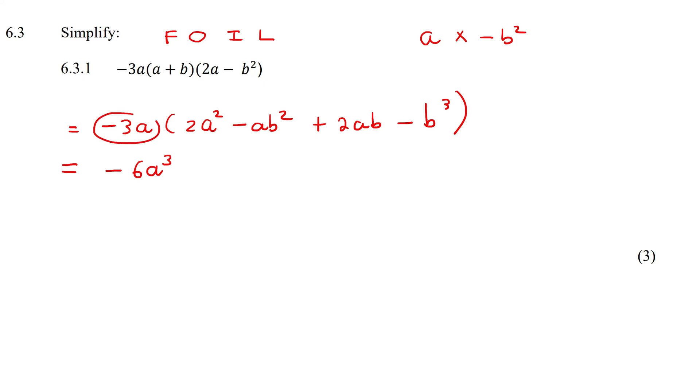For this next one, it's negative times a negative. That makes a positive 3a. Now how many a's are there? Well, there's a one and there's a one. That's going to be a². And then there's a b² over there.